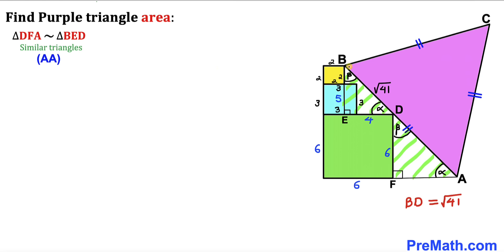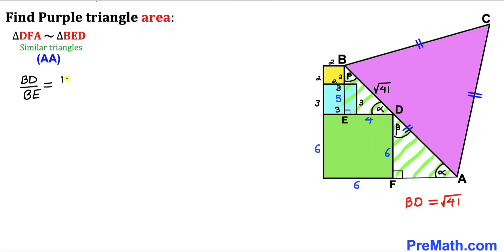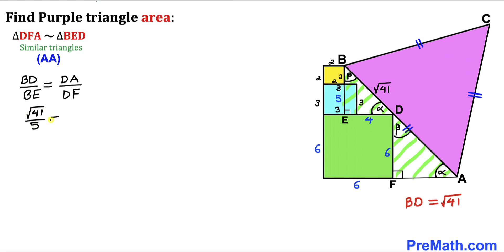Since the triangles are similar, we set up the proportion: BD divided by BE equals DA divided by DF. We know BD is square root of 41, BE is 5, and DF is 6. Substituting, we get square root of 41 divided by 5 equals DA divided by 6.